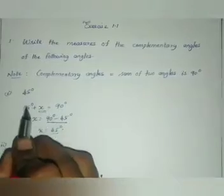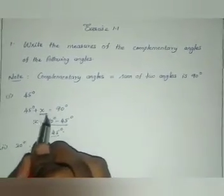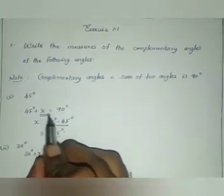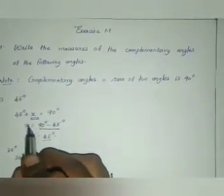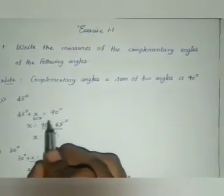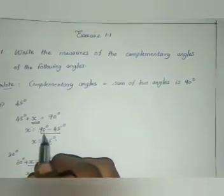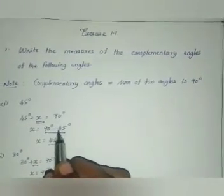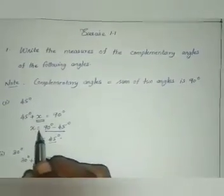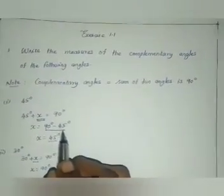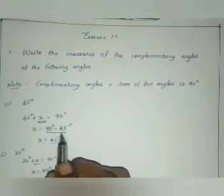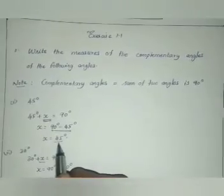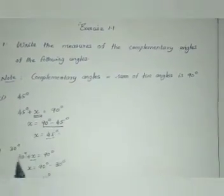The first one is 45 degrees. When we add another angle to 45 degrees, we should get 90 degrees. So, 45 degrees plus x equals 90 degrees. Taking the 45 to the other side, it becomes minus 45. So x equals 90 degrees minus 45 degrees. When we subtract, we get x equals 45 degrees. So the complementary angle of 45 degrees is 45 degrees.